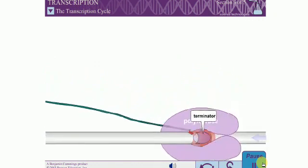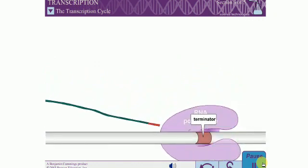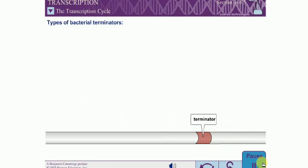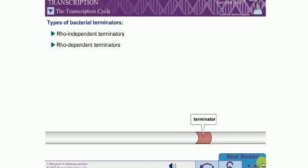Sequences called terminators trigger the elongating polymerase to dissociate from the DNA and release the completed RNA chain. Bacteria have two types of terminators: rho-independent and rho-dependent.